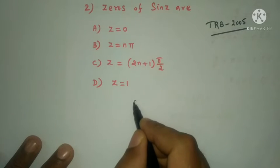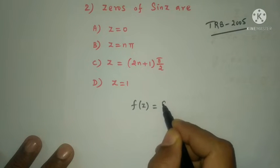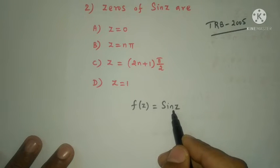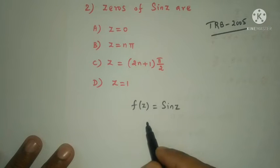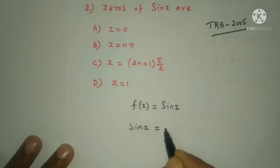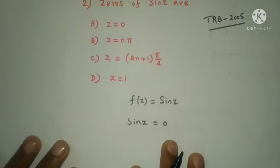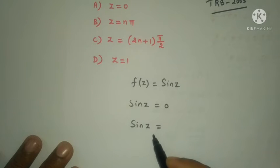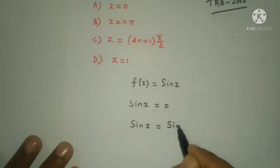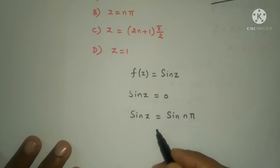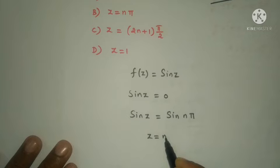For f(z) = sin z, we set f(z) = 0, so sin z = 0. In general, sin(nπ) = 0 for integer n. Therefore sin z = 0 gives z = nπ, and the answer is option B.